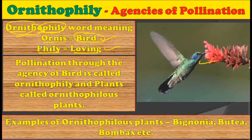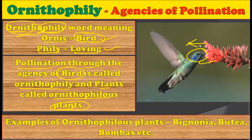The term ornithophily is given for this particular concept. Pollination through the agency of birds is called ornithophily, and the plants are called ornithophily plants — those plants which use birds as their pollinating agent. The flowers are known as ornithophilous flowers.